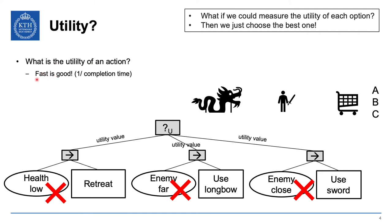Suppose this character is going shopping and has three shops to choose between. Maybe 'fast is good' — you want to go to the shop where you can shop in the least amount of time. So one utility measure could be 1 over completion time: the smallest completion time gives the highest utility.